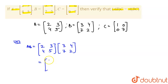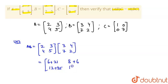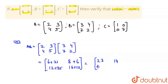Computing AB: element (1,1) = 2×3 + 3×7 = 6 + 21 = 27. Element (1,2) = 2×4 + 3×2 = 8 + 6 = 14. Element (2,1) = 4×3 + 5×7 = 12 + 35 = 47. Element (2,2) = 4×4 + 5×2 = 16 + 10 = 26. So AB equals [[27,14],[47,26]].